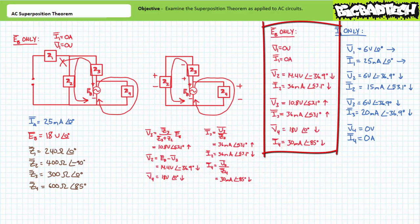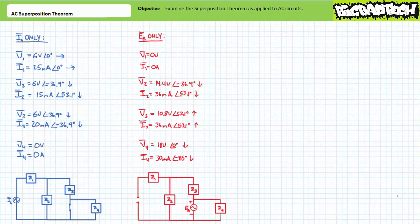Now that we've completed independent analysis of this circuit from the perspective of all sources, the only remaining task is to summate these effects accounting for magnitude, phase shift, polarity, and direction. Note how the inclusion of shorts and opens have fundamentally changed the nature of this circuit: shorting out EB effectively removes Z4 from consideration, while the open effectively removes Z1. From the perspective of one source or another, this same circuit exhibits fundamentally different properties. Let's now summate individual properties.